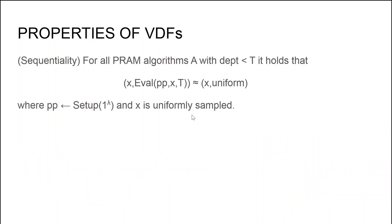I'm now going to give a more precise definition of the properties that VDFs shall satisfy. The first property is sequentiality. Sequentiality says that for all parallel RAM algorithms A with depth at most t, the distribution of the instances together with the output of the VDF over that instance is computationally close to uniform, where the instance x is uniformly sampled and the time parameter and public parameters are sampled according to the setup algorithm. This means that for a uniformly sampled instance x, the output of a VDF is unpredictable to all algorithms A that don't have enough time to compute the evaluation function.